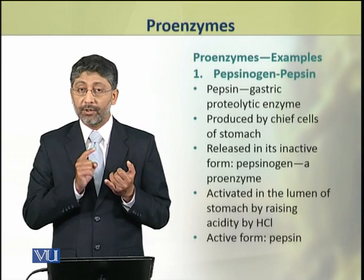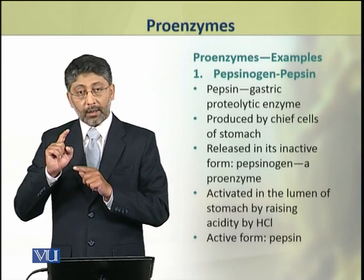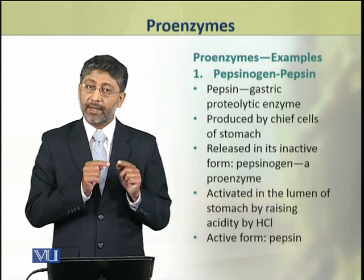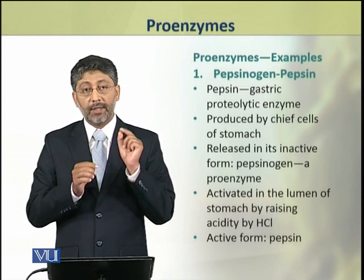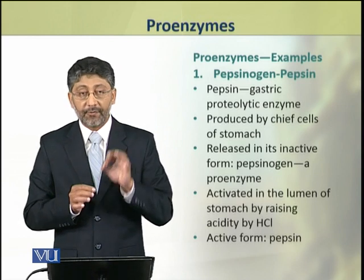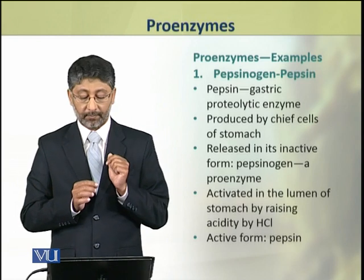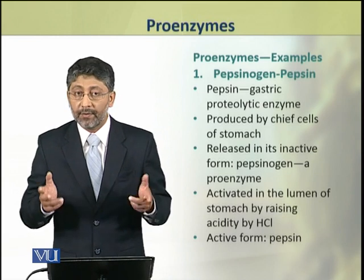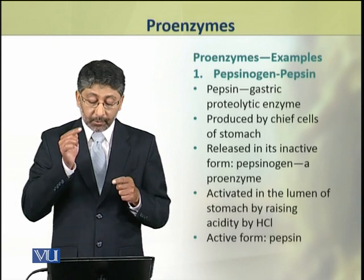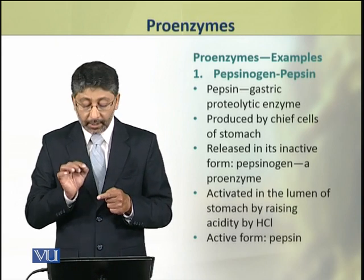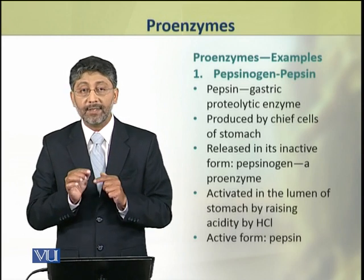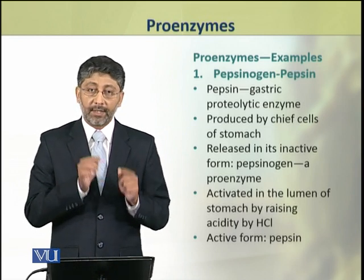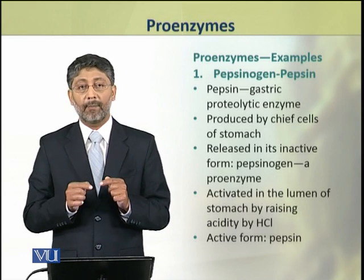First we shall discuss pepsinogen. The active form of pepsinogen is pepsin, which is a gastric proteolytic enzyme. This enzyme is synthesized by the chief cells of gastric glands of the stomach. It is released in the inactive form, pepsinogen, which is a proenzyme. This proenzyme, pepsinogen, is activated in the lumen of the stomach by raising the pH by hydrochloric acid. The increase in acidity converts pepsinogen into its active form, pepsin.